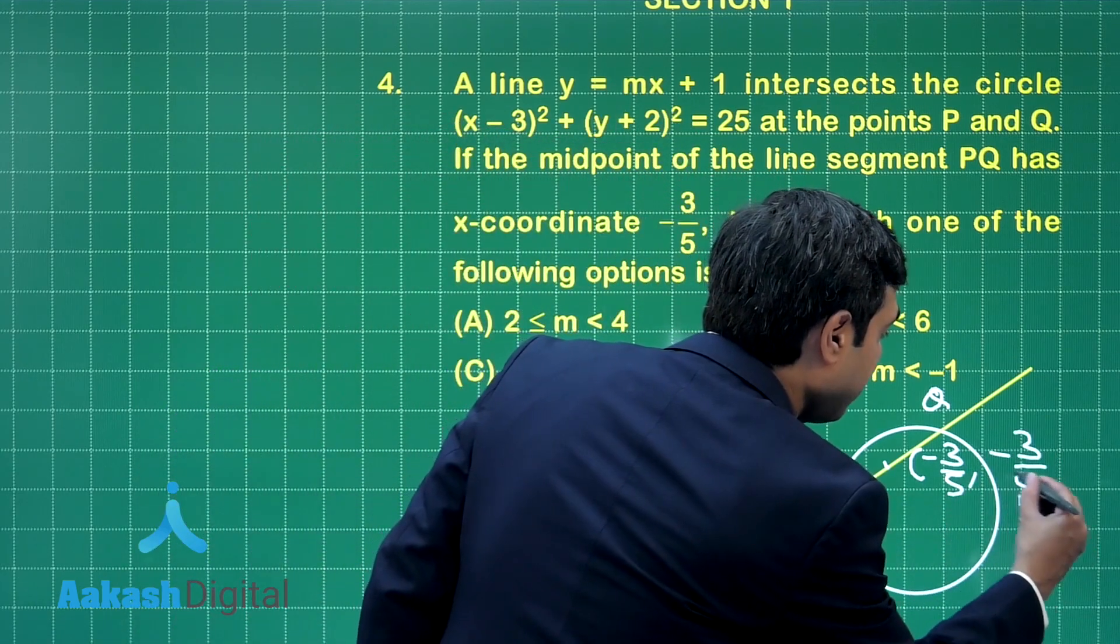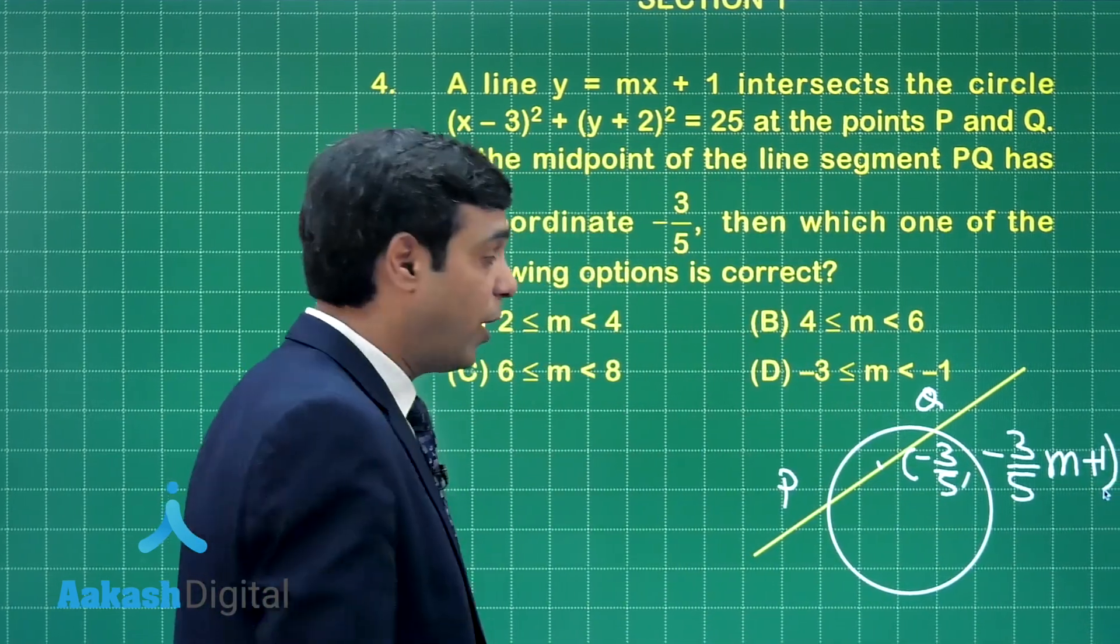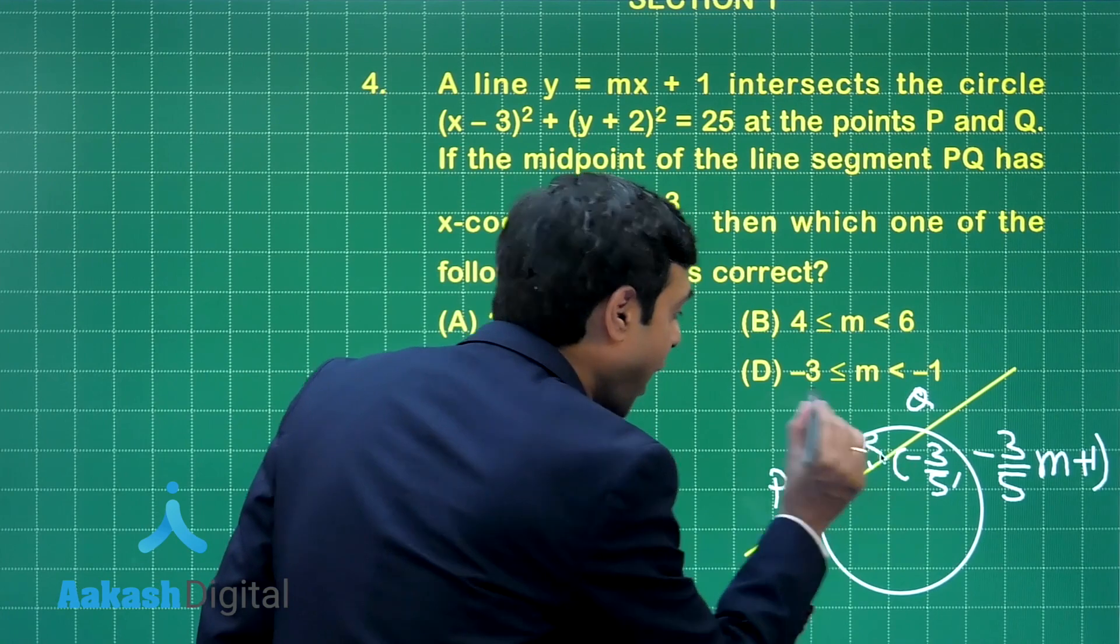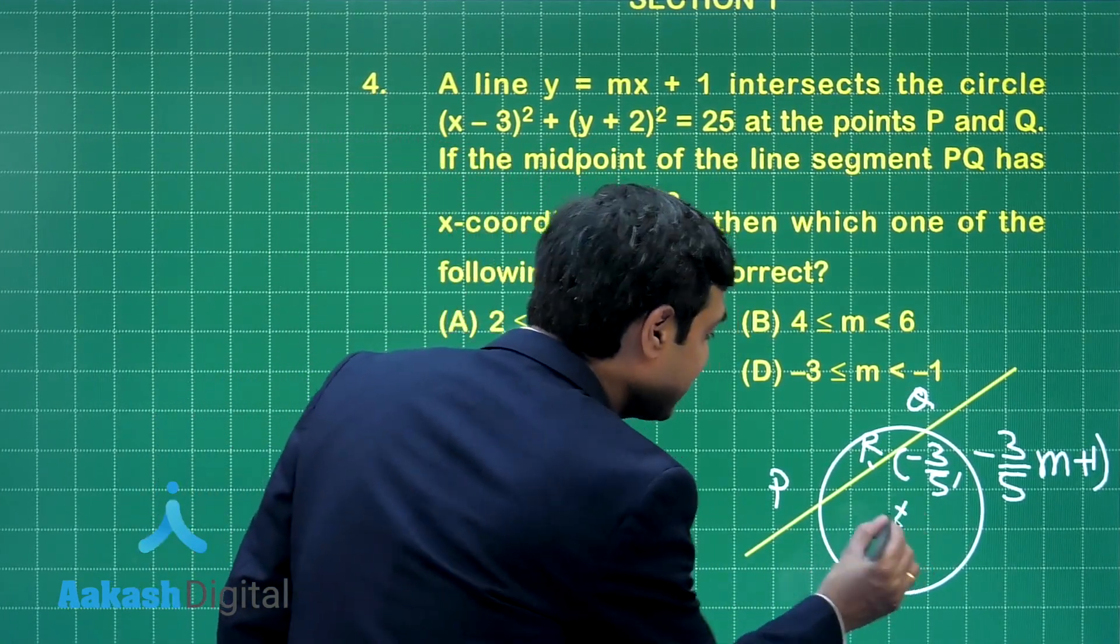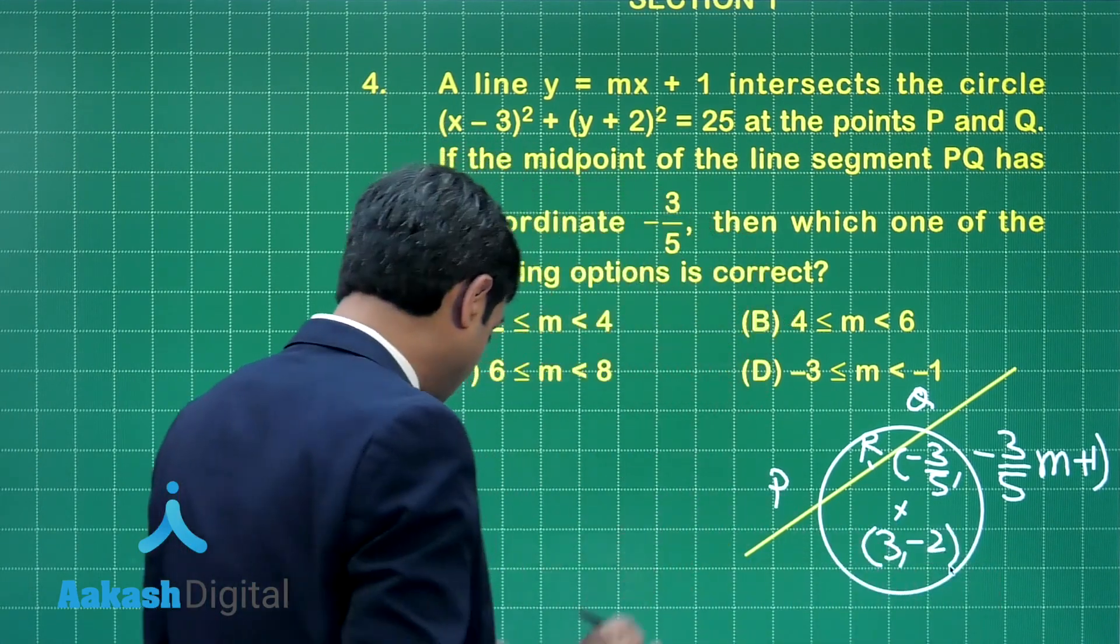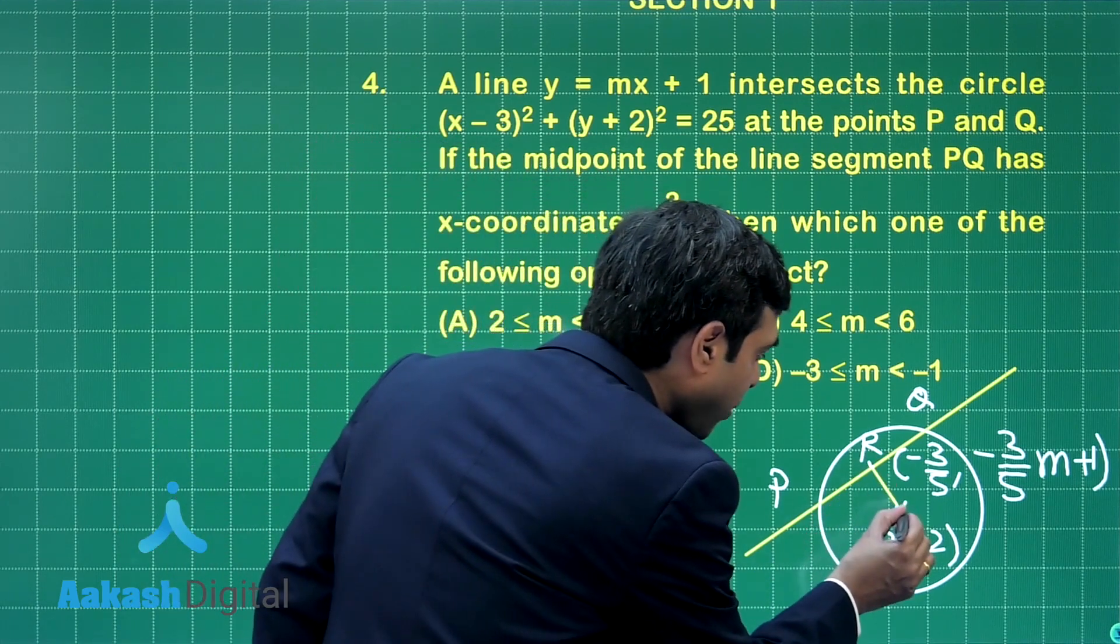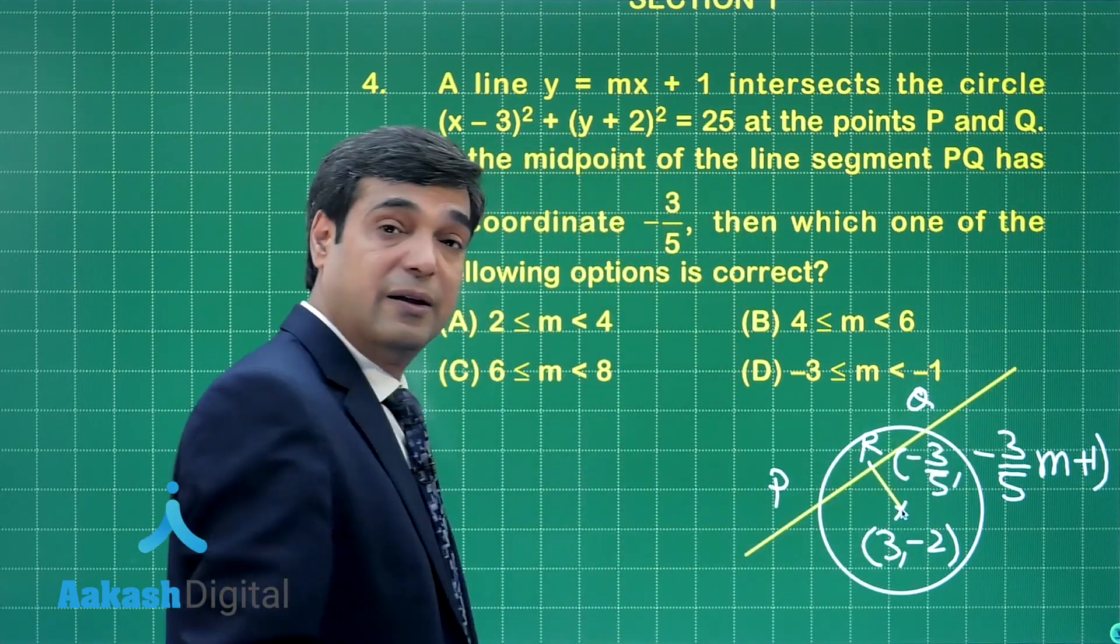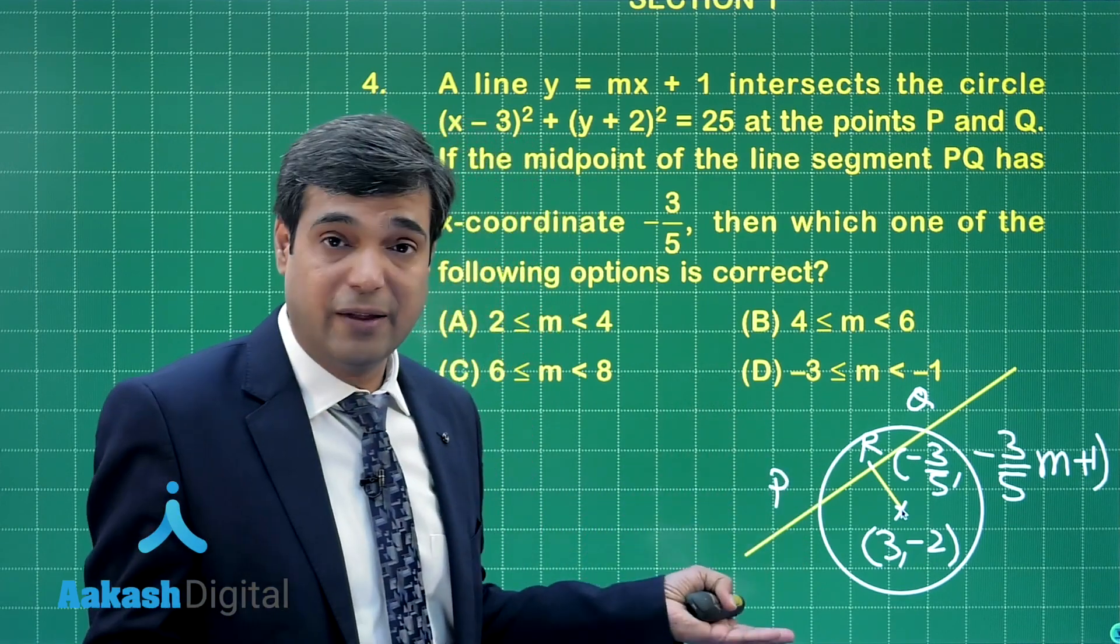So, minus 3 by 5 m plus 1. So this is the coordinate for midpoint. Let us consider it as R. Right. Center of the circle is known to us, here is the center and its coordinate is 3 comma minus 2. Now, what next we need here? We simply need to find the slope of this line and this line, just multiply that two and say this is equal to minus 1, you will get the value of m.